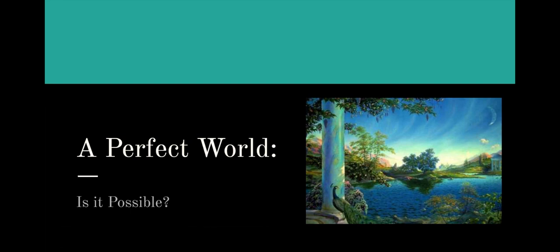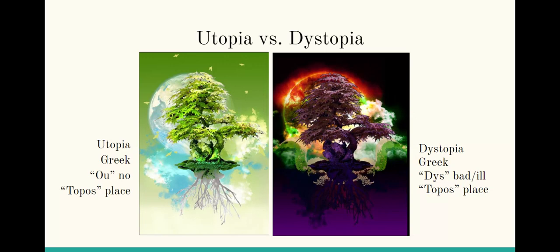Today we're going to talk about utopias and on the flip side dystopias, but let's begin with utopias. Utopia comes from Greek — 'eu' meaning no and 'topos' meaning place.